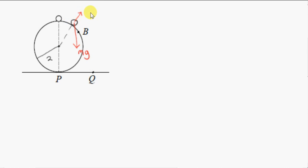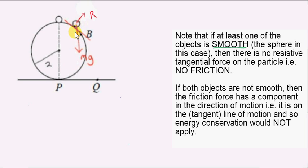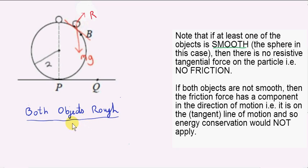Let's call the magnitude of this R. These are the only two forces acting on the particle. The reason we know that is that we are given that one of the objects is smooth — specifically, the sphere is smooth.